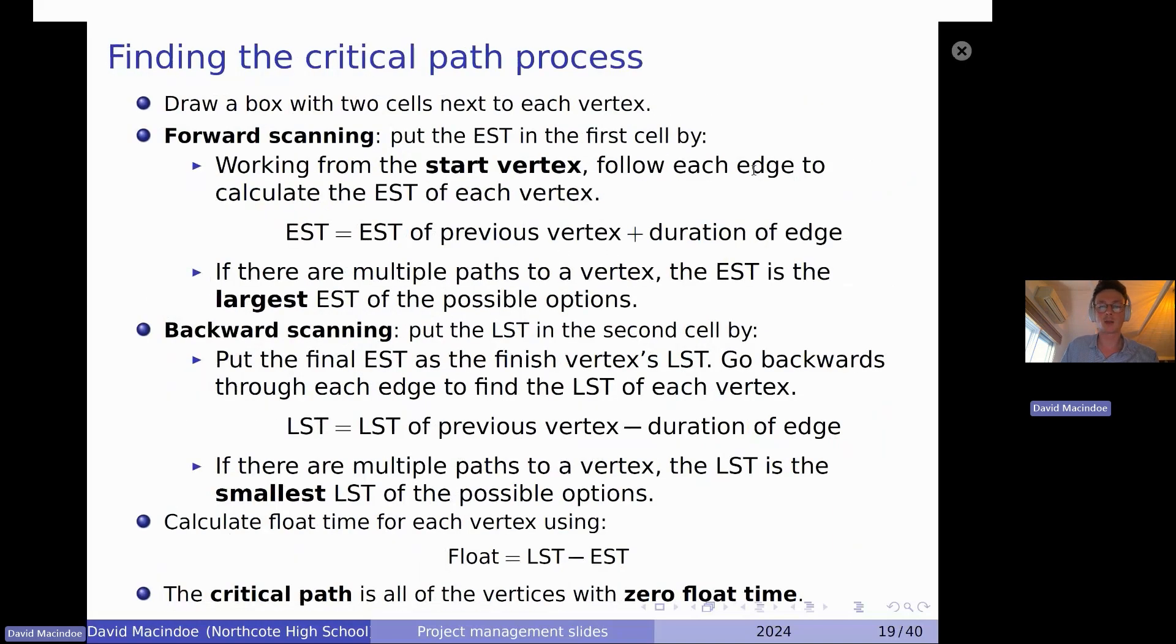So here is my notes on finding the critical path. I would suggest probably having something like this in your bound reference could be good. What I do is I'm going to draw a box with two cells, so just kind of two boxes next to each other, next to each vertex, normally just kind of just above it.